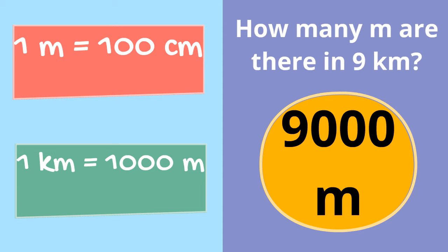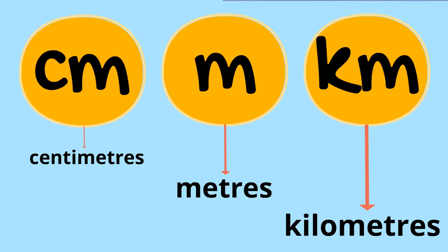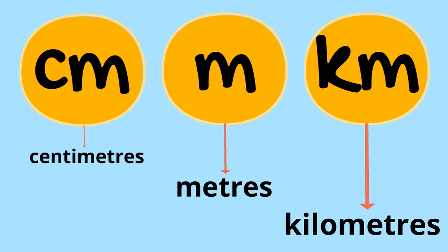Did you get both of them correct? If you did, good job. If not, maybe pause the video, rewind and have a look at that section again. So as you probably noticed, centimetres are the smallest unit we've talked about today. Metres are the middle unit. And kilometres are the biggest unit of length we've talked about today.